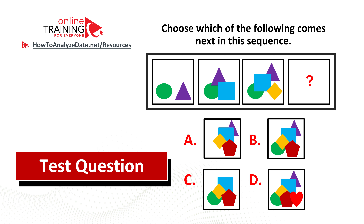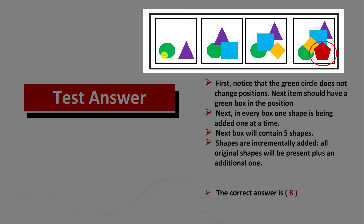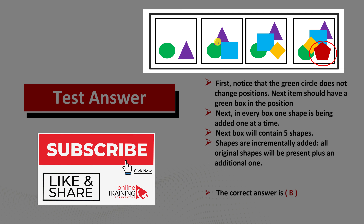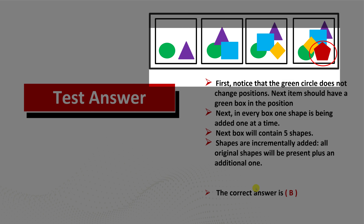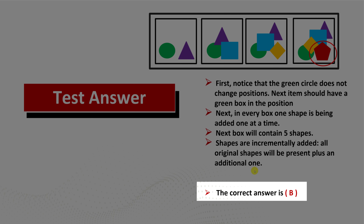Let's continue to solve this challenge together. Looking at the original items in the sequence, you see a green circle is present in every box. Items are also added incrementally — the first square has two objects including a green circle; the second adds a triangle; and the third has all original items plus a yellow diamond. So the next item should have a green circle in the bottom left corner, five items total, and all original items present.